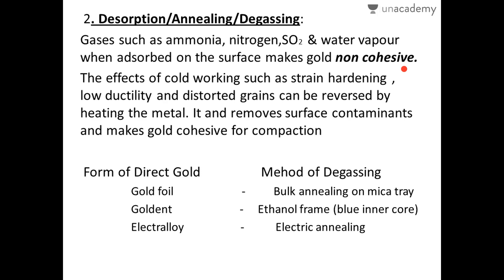While restoring pure gold into the cavity, we heat it over the flame of an ethanol burner or an electric annealer, depending on the form of gold used. By this method of annealing, we remove the surface contaminants and restore pure gold in its cohesive form. Effects of cold working such as strain hardening, low ductility, and distorted grains are reversed by this heating process.